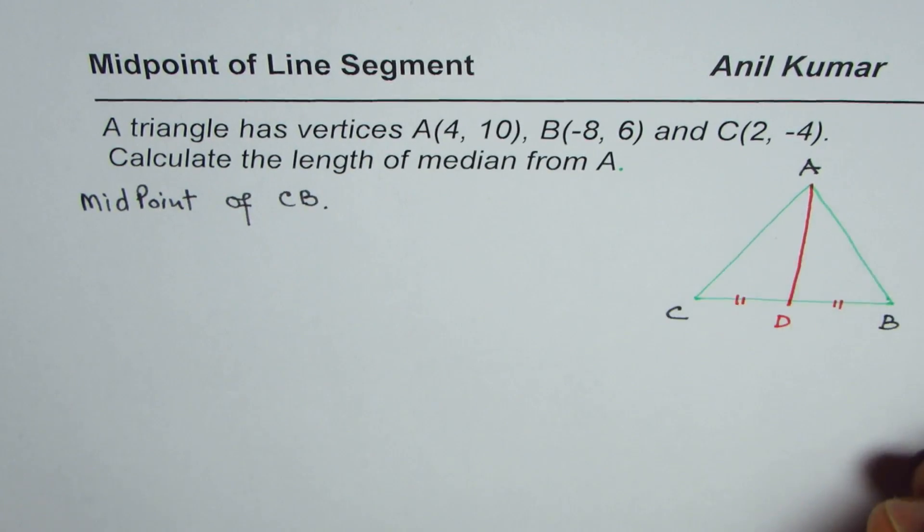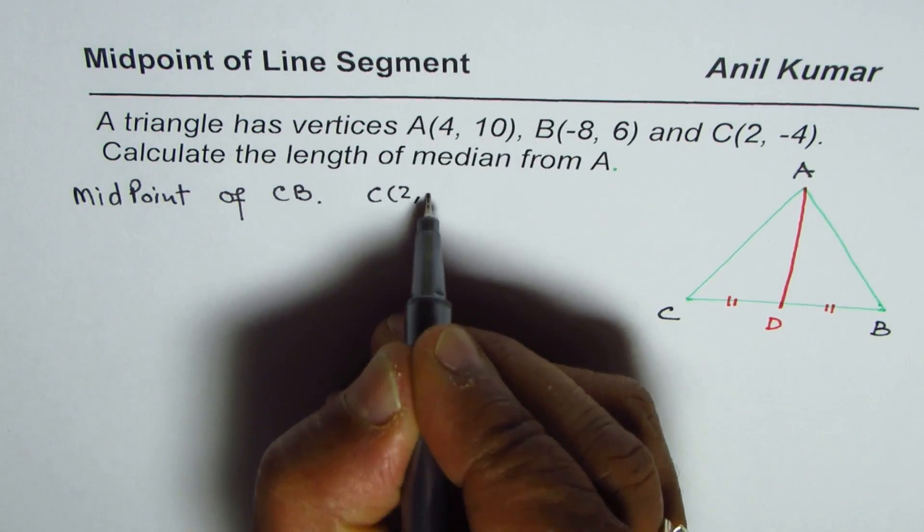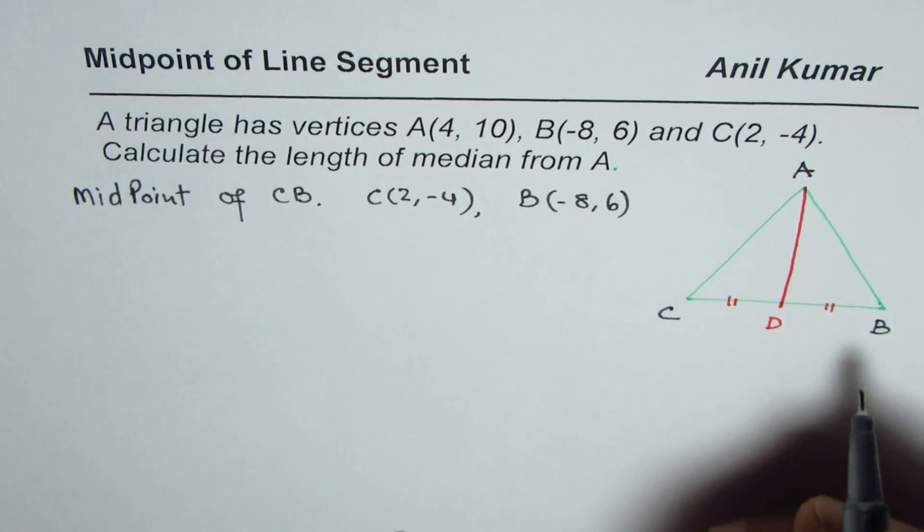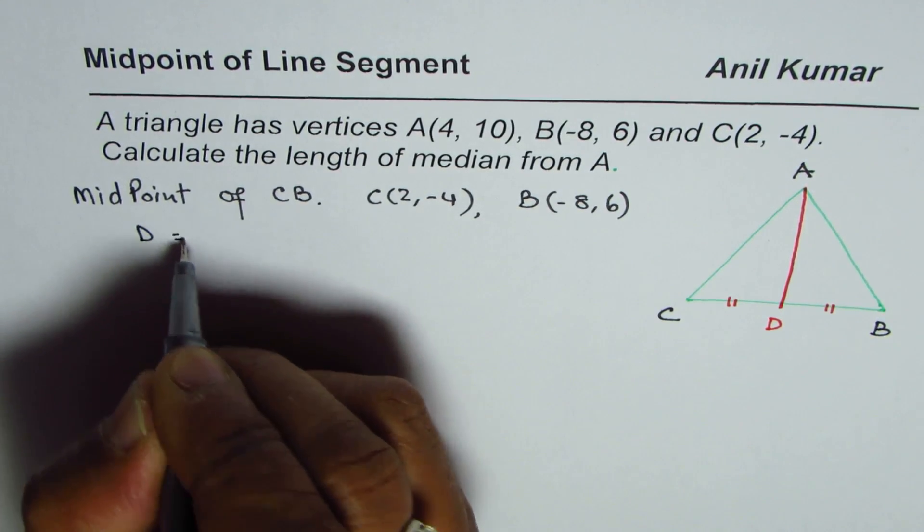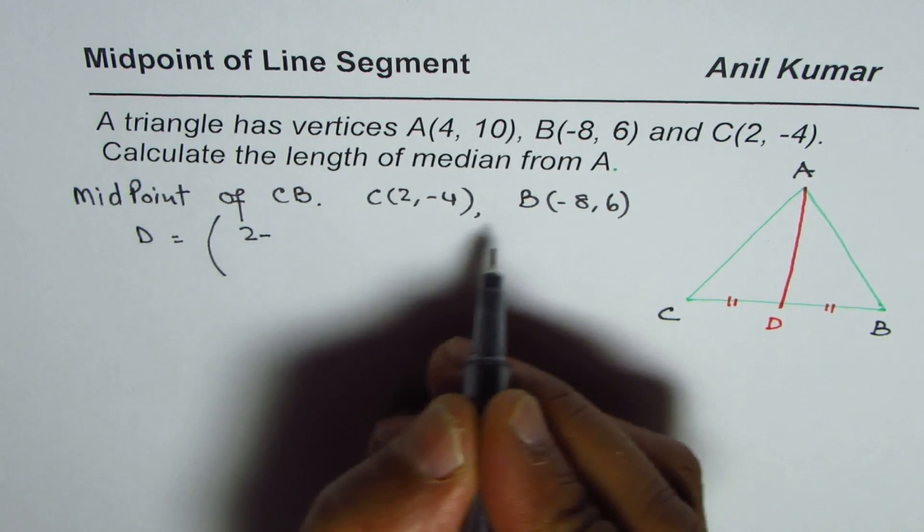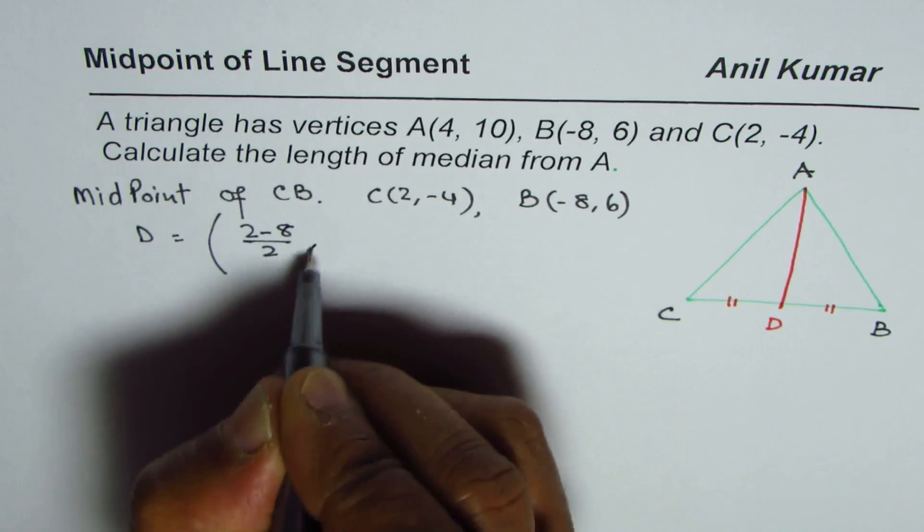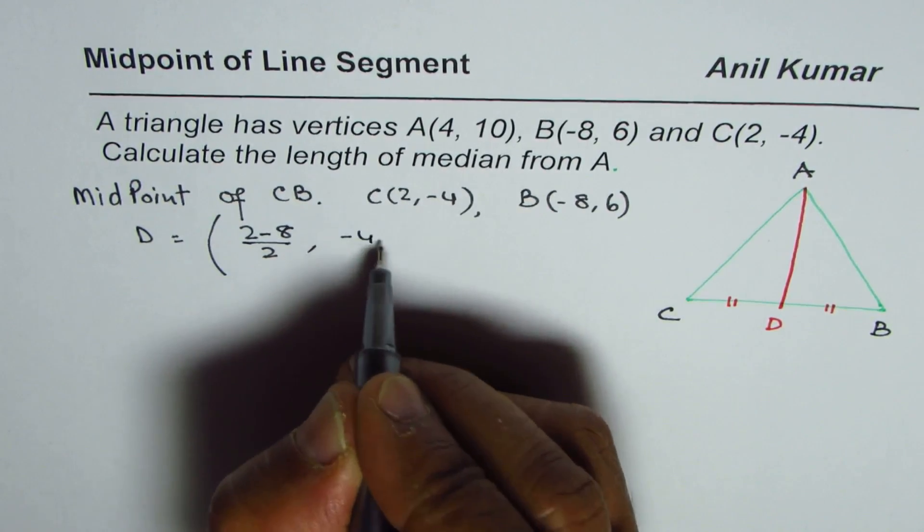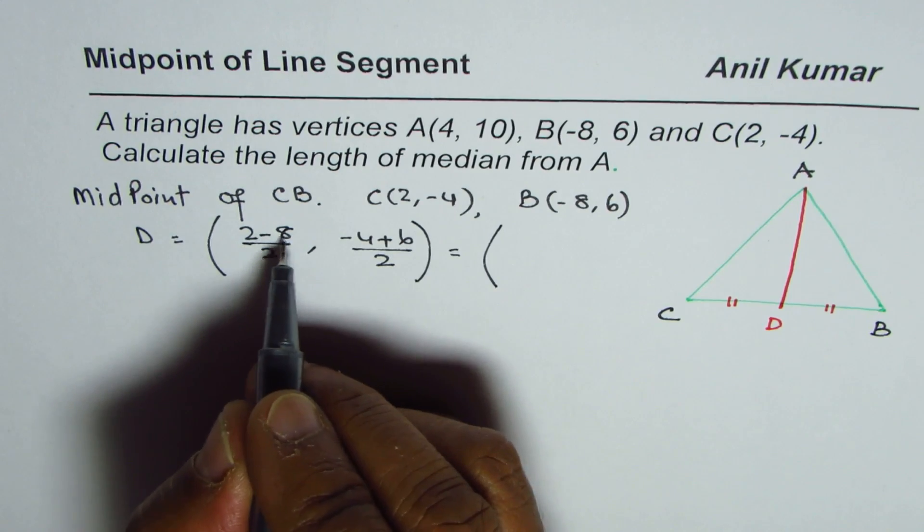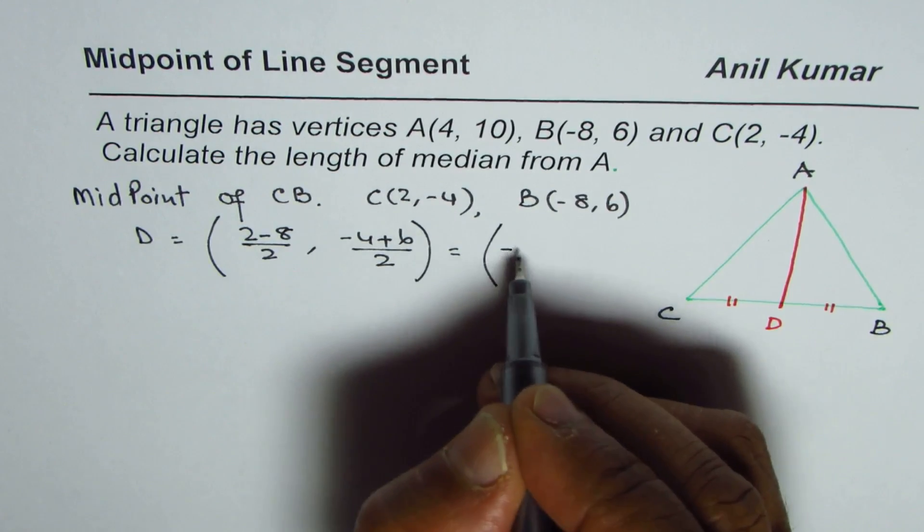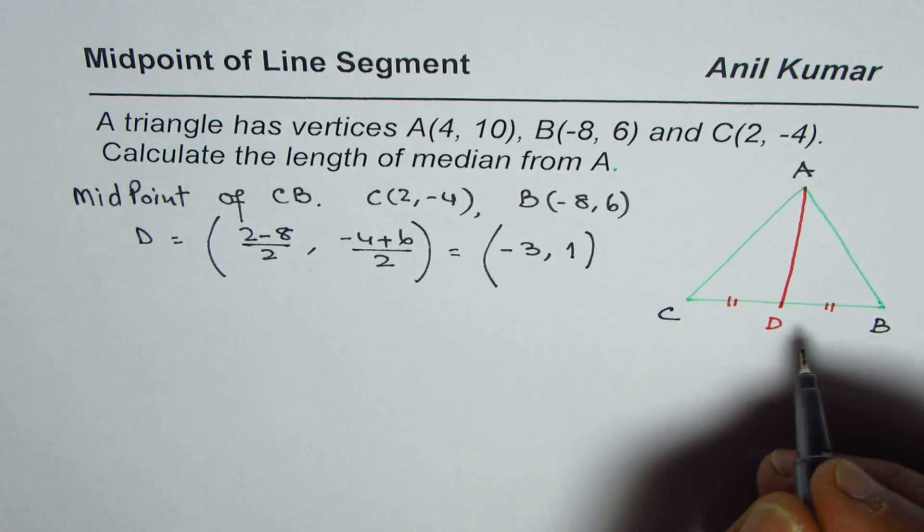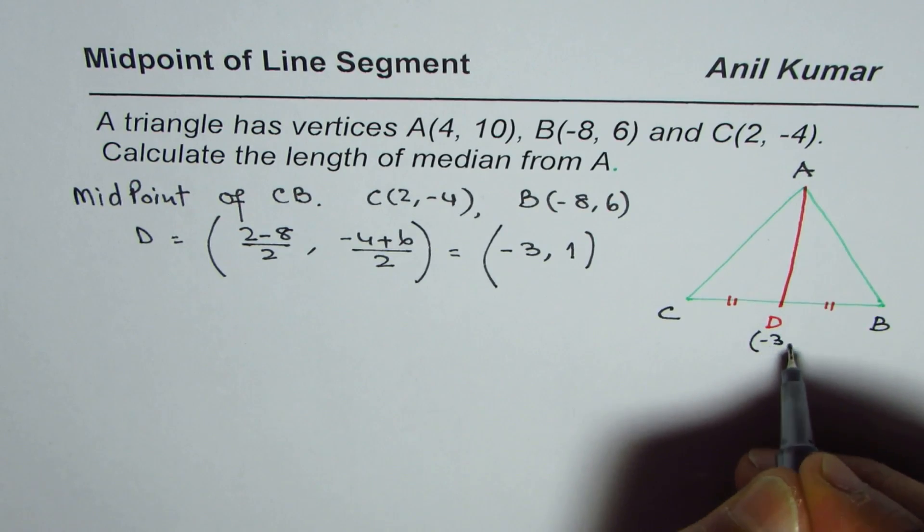Coordinates of C are (2,-4) and that of B are (-8,6). The coordinates of point D will be the average of these two. So we add them: 2 plus -8 is -6 divided by 2 is -3, and the y value will be -4 plus 6 is 2 divided by 2 is 1. So the coordinates of point D are (-3,1).